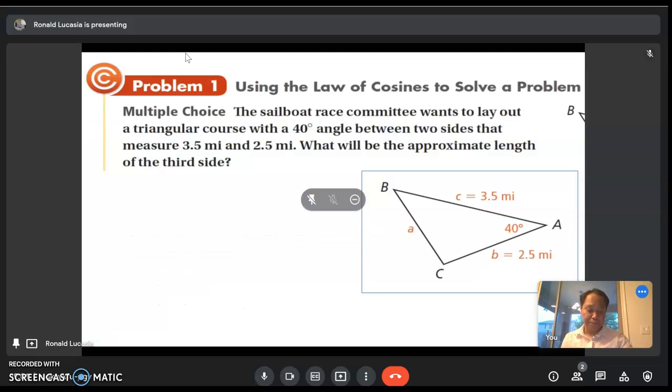Example number one: The sailboat race committee wants to lay out a triangular course with a 40 degree angle between two sides that measure 3.5 miles and 2.5 miles. What will be the approximate length of the third side? I decided to omit the multiple choice options so you will be forced to solve.